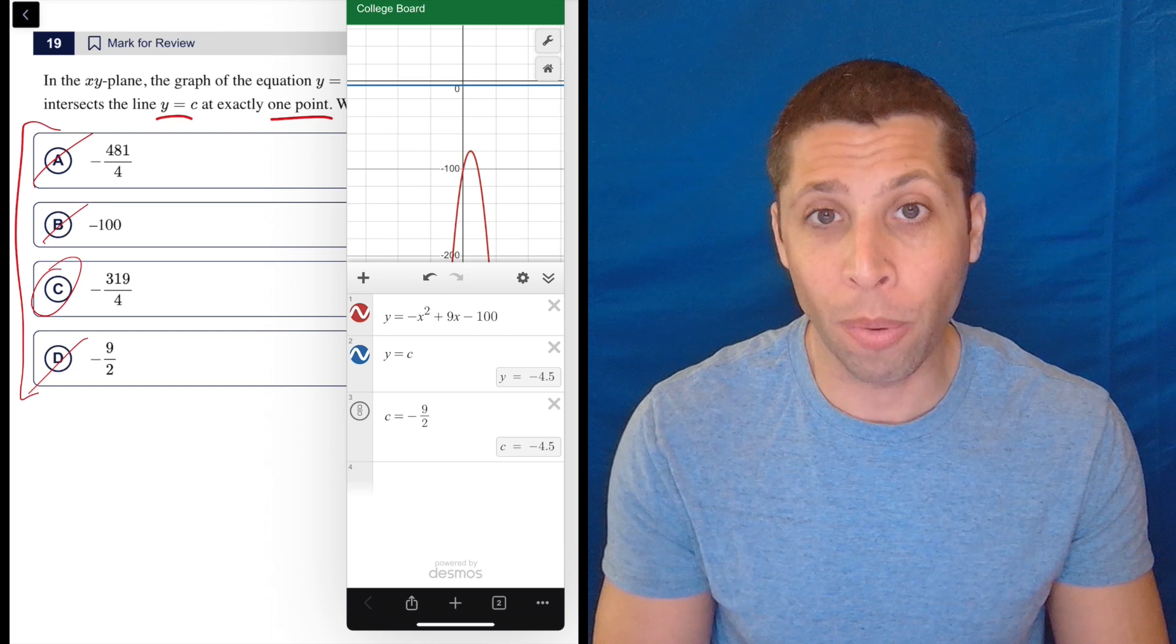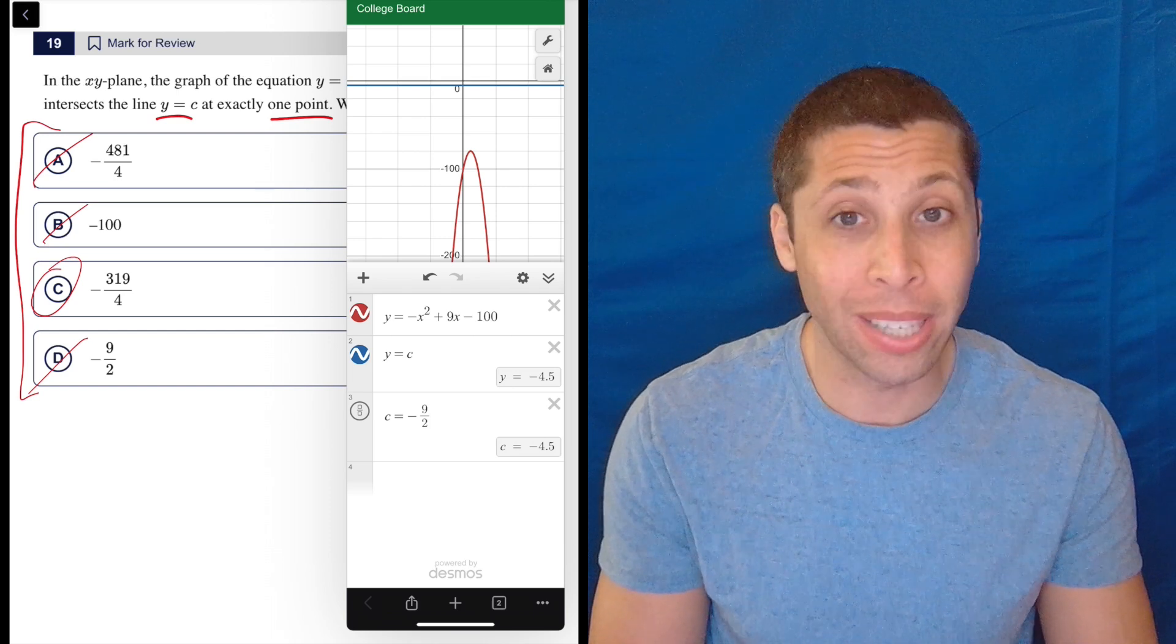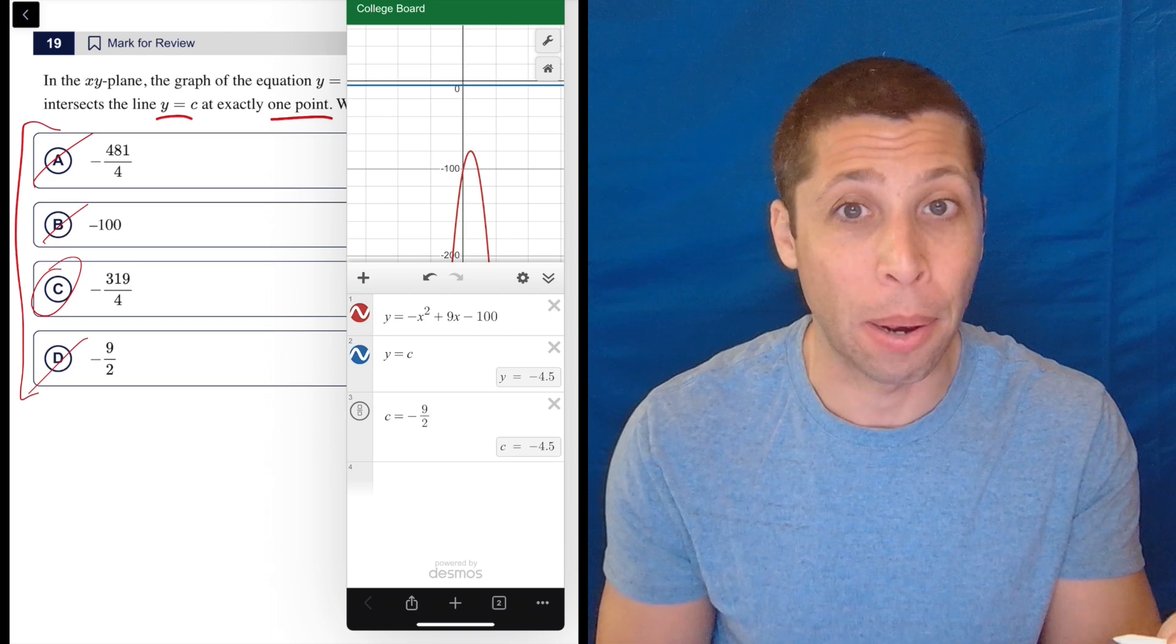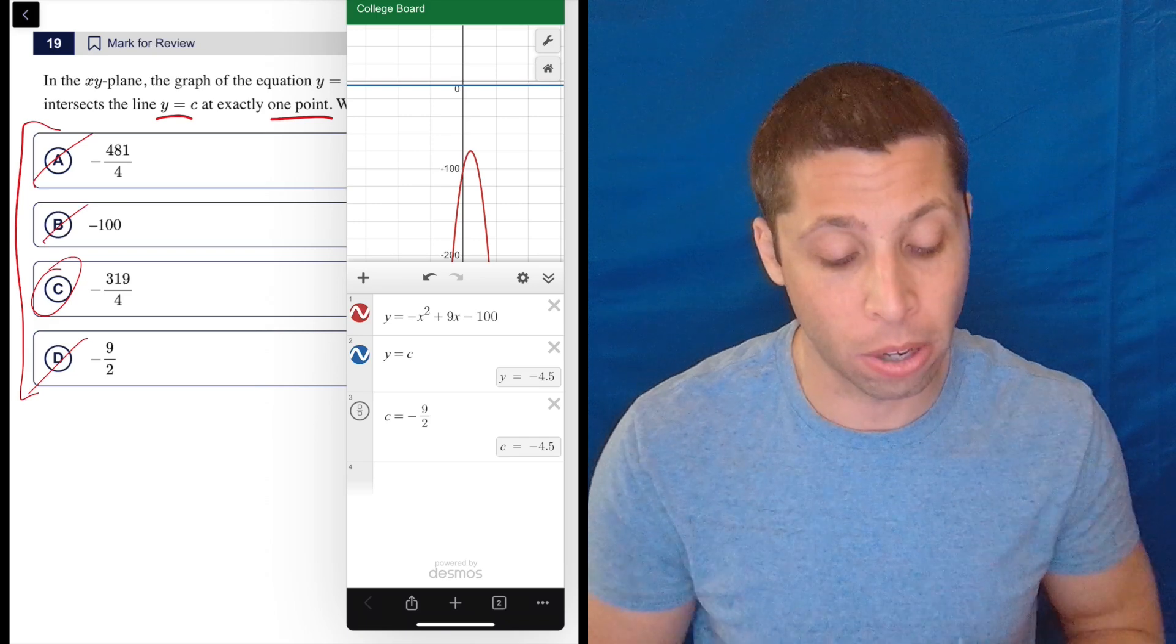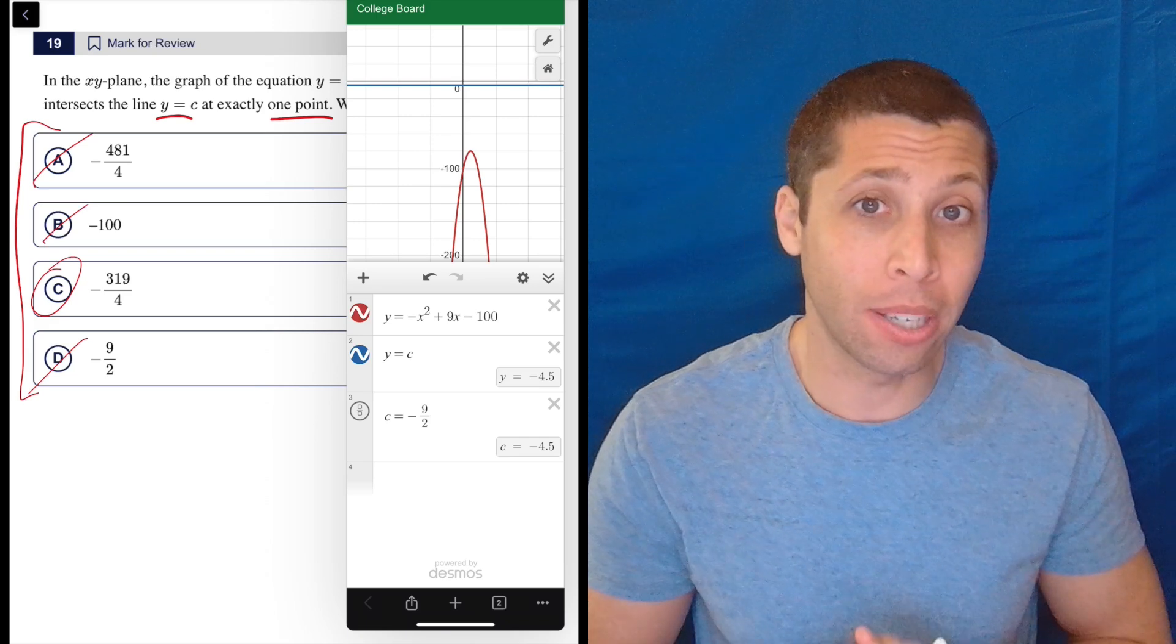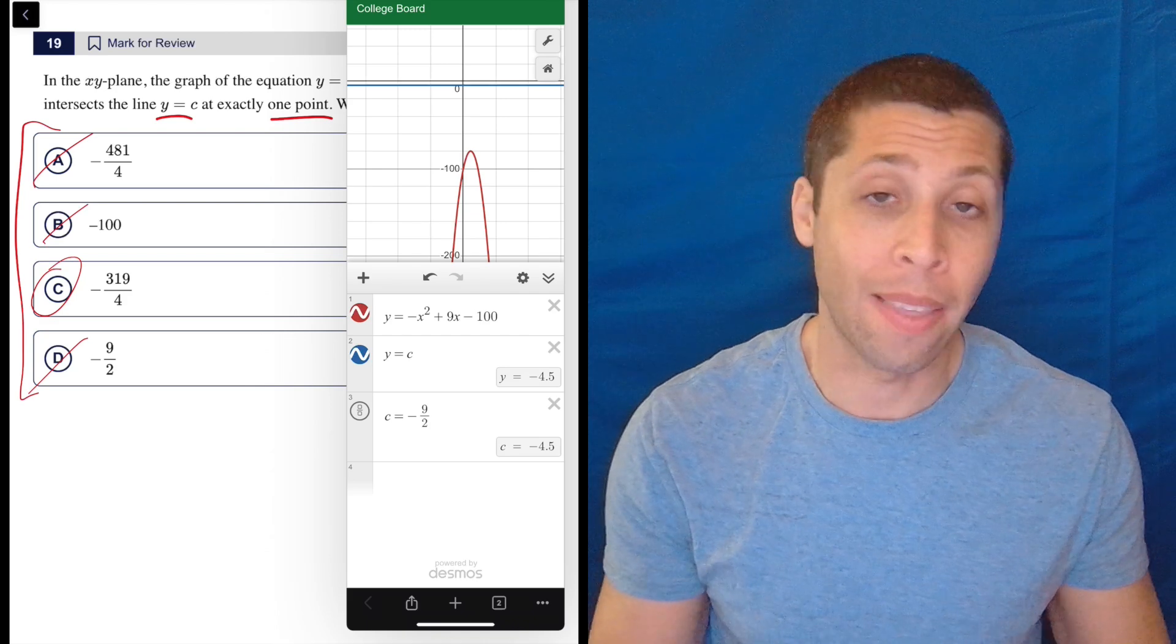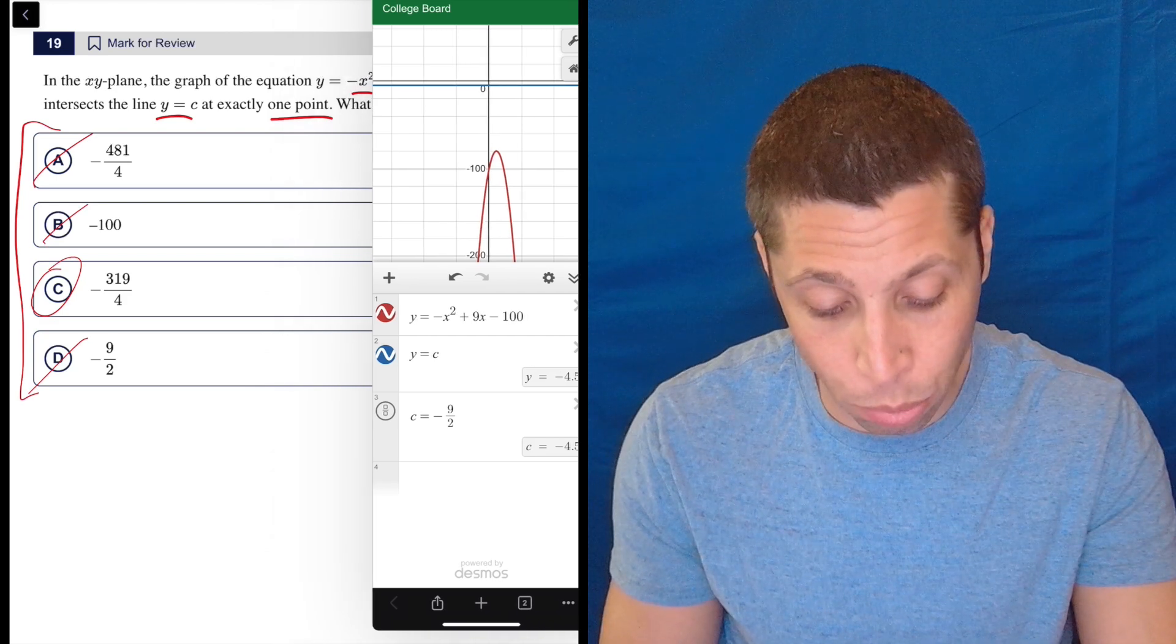I will show you what to do the long way because if they took away the answer choices here, negative 319 over 4 is such a bizarre number. We would never use a slider to guess and check that randomly. It's so weird. So we'd have to do it the longer way then. And maybe the SAT will try to do that when they want to up the difficulty of a question. Just take the answer choices away and then you can't guess and check. But if they leave them, take that opportunity. It's a huge win.